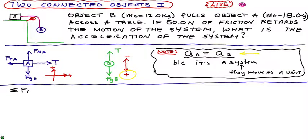So we have the sum of the forces acting on A in the x direction is equal to the mass of A times the acceleration. And I'm just going to call that A for acceleration because it's the same for the system. So in the x direction, we have tension pulling the object to the right. We have friction retarding the motion.